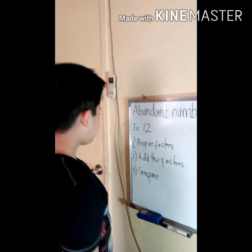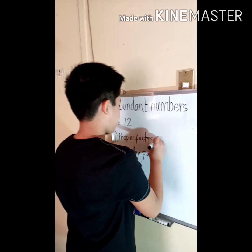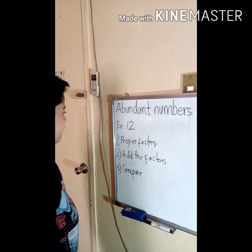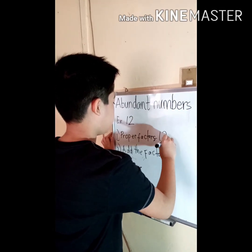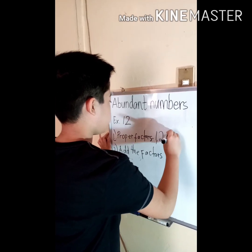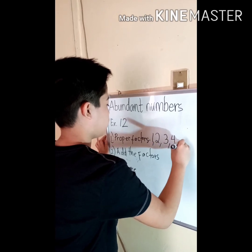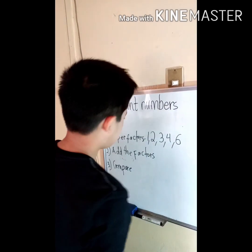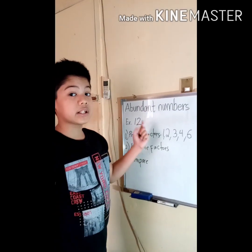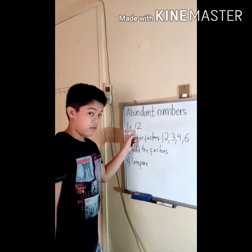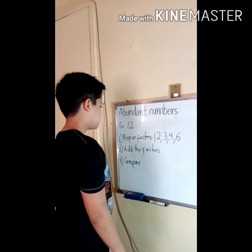So we have the number 12 here. Let's get the proper factors of 12. The proper factors of 12 are 1, 2, 3, 4, and 6. The proper factors of a number are all the factors of that number except the number itself.